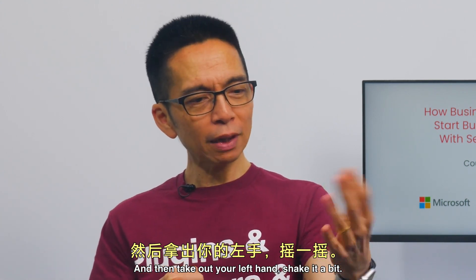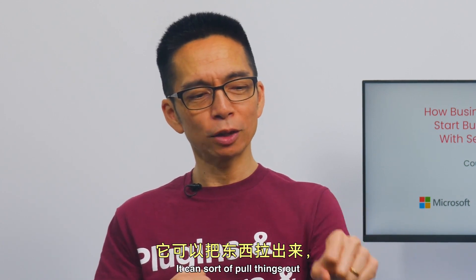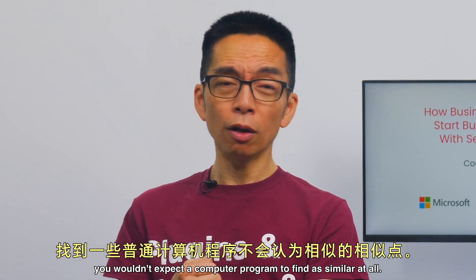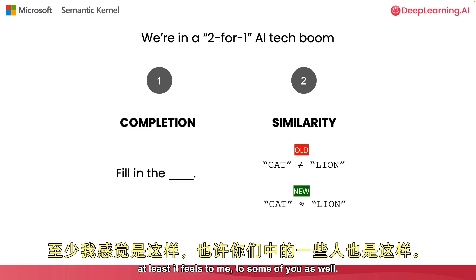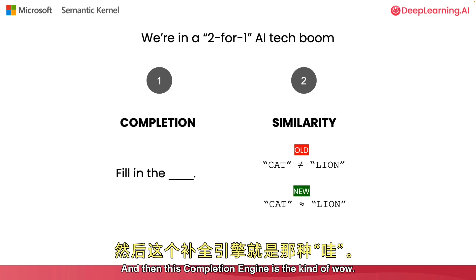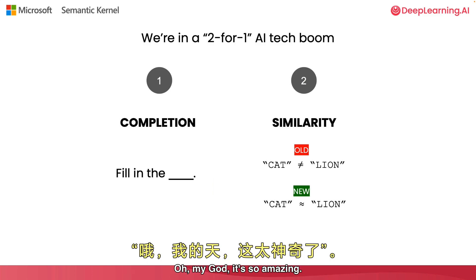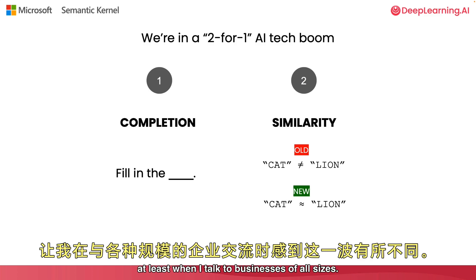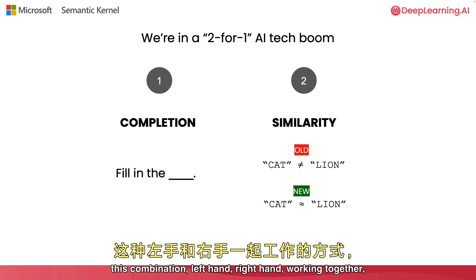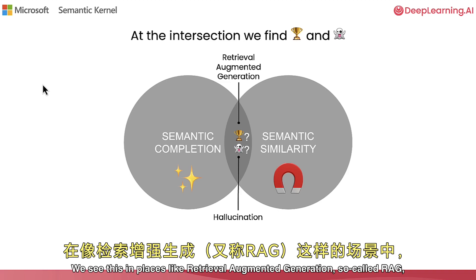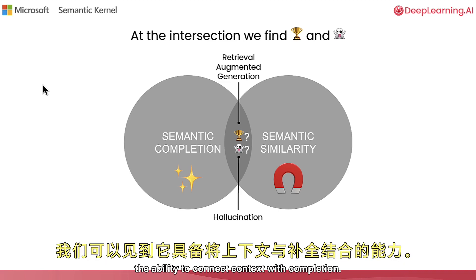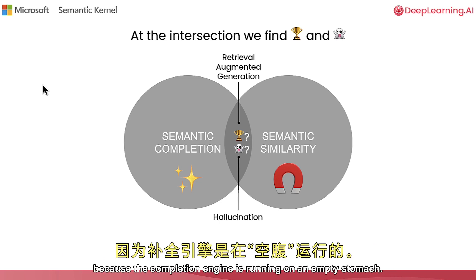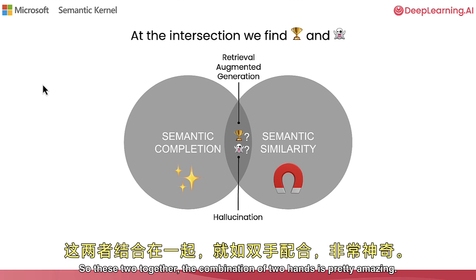Then take your left hand — that's the similarity engine. It's like a magnet that can pull things out and find things that are similar in ways you wouldn't expect a computer program to find. The ability to compare meaning is very new. We tend to focus on the completion engine, but the similarity engine needs some love too. It's this combination of the two that makes this AI wave feel different for businesses of all sizes. We see this in retrieval augmented generation — RAG — the ability to connect context with completion. If you don't have context and try to complete something, you end up with hallucinations because the completion engine is running on an empty stomach. These two together are pretty amazing.